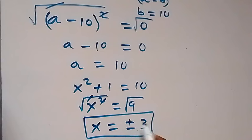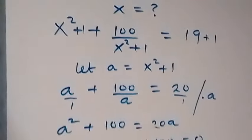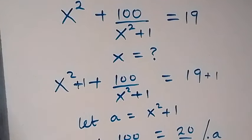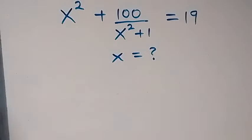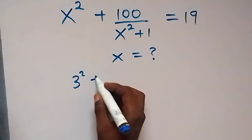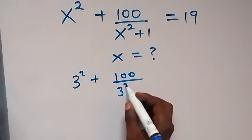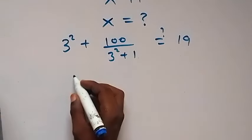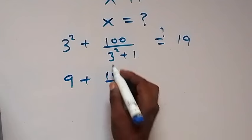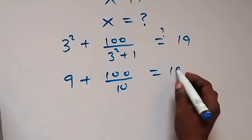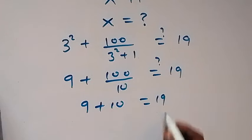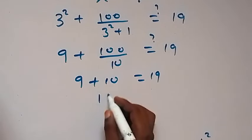Let's check if these values satisfy the given equation. Substituting x equals 3: we get 3 squared plus 100 over 3 squared plus 1, which is 9 plus 100 over 9 plus 1. That gives 9 plus 100 over 10, which is 9 plus 10, equals 19. So 19 equals 19 — the left hand side equals the right hand side.